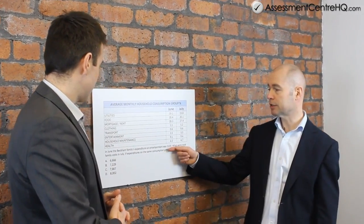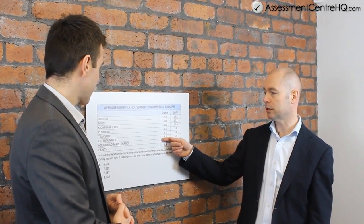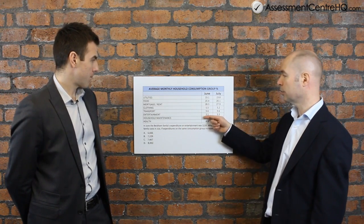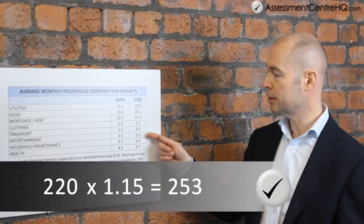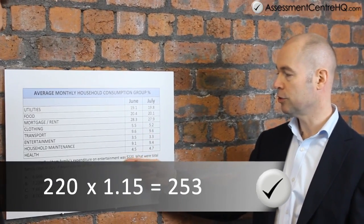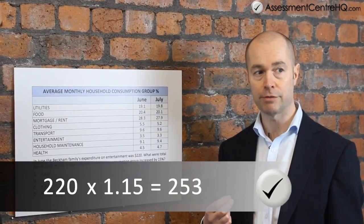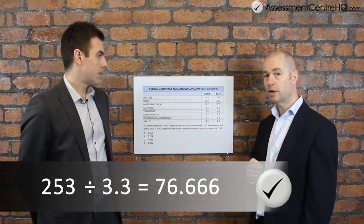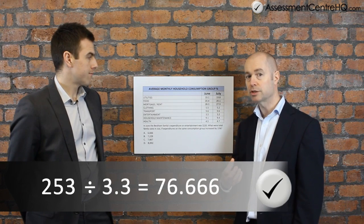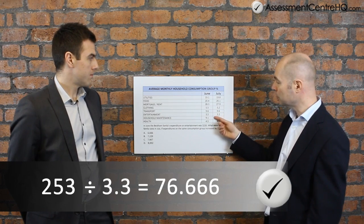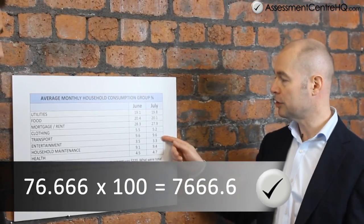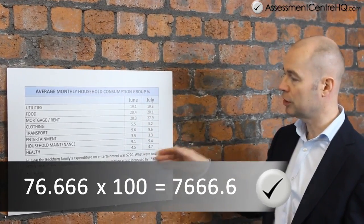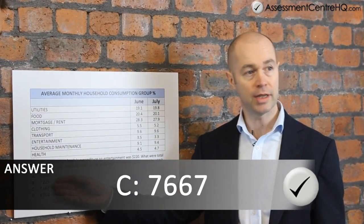We're following the same steps as the first question. Step number two: begin with the question. Don't wade into the data. Focus on the question, and immediately you can rule out a lot of the data that's not needed. It tells us the expenditure in June on entertainment was $220, and that expenditure on the same consumption group increased by 15%. We're going to increase $220 by 15% to work out how much was spent on entertainment in July — so $220 multiplied by 1.15. Then, when we know what 3.3% of the cost was, we divide by 3.3 to find 1%, and multiply by 100 to find 100% — that gives us the total cost in July. When we've calculated that, you'll find the answer is C.